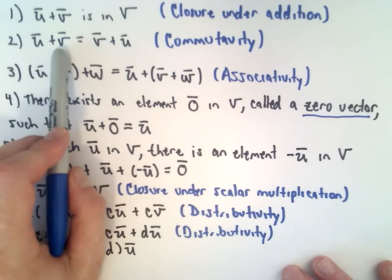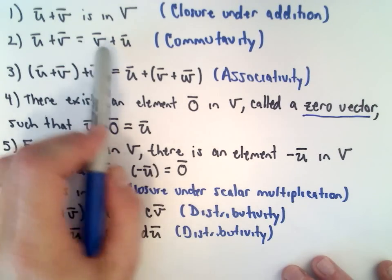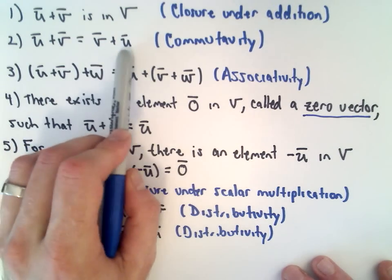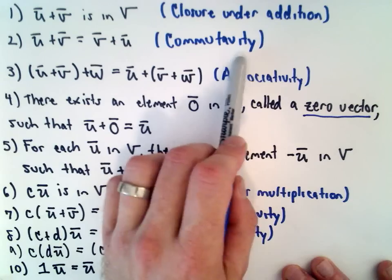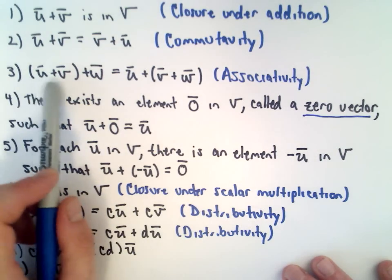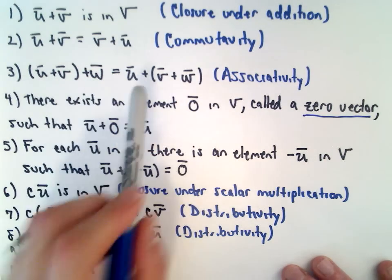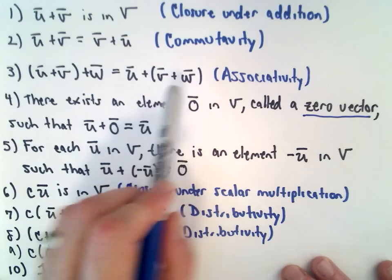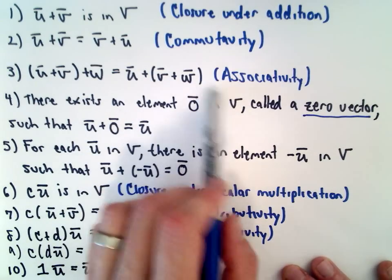Likewise, vector U plus vector V, we can reverse that. That's going to be the same thing as vector V plus vector U. That's commutativity. If we take the quantity U plus V and then add W, that's going to be the same thing as if we take U plus the quantity V plus W. So that's associativity.